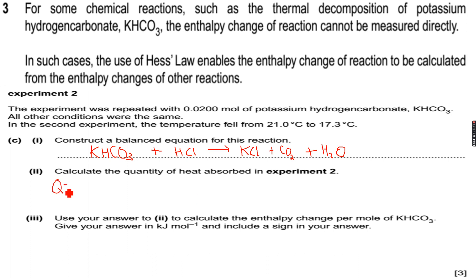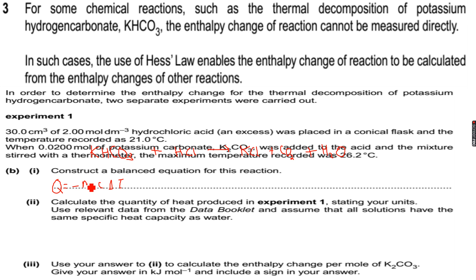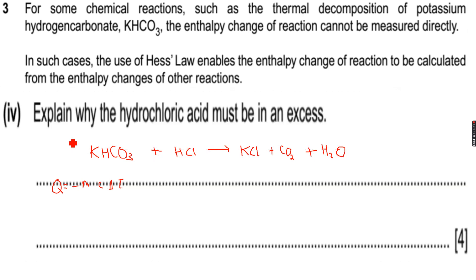So Q is equal to minus MC delta T. They said that all other conditions were the same, so the amount of hydrochloric acid used was also the same. So 30 centimeter cube.